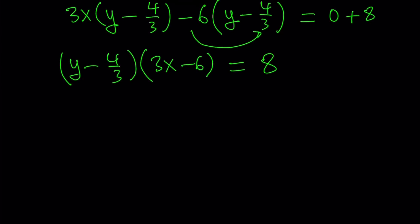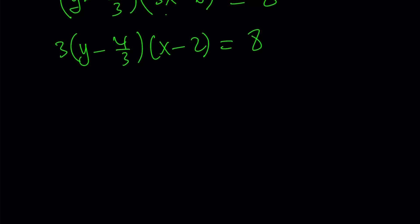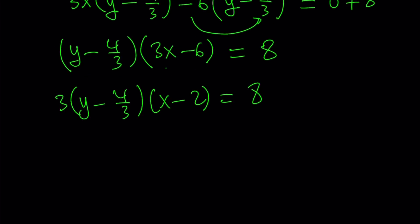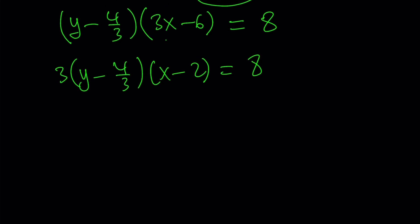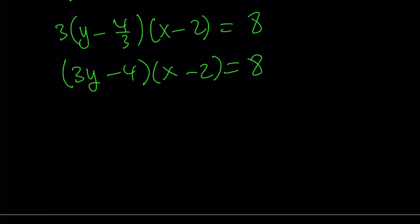Not so great because we do have a 3 here but what we can do is we can take out a 3 here and multiply it by y minus 4 thirds. If you distribute the 3 over the y minus 4 thirds, that gives us 3y minus 4 multiplied by x minus 2 equals 8.